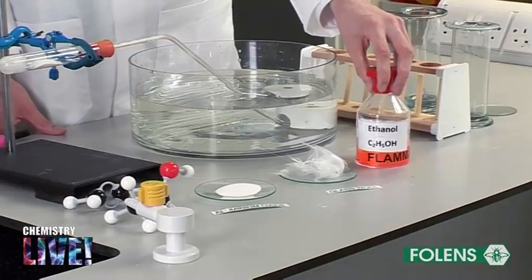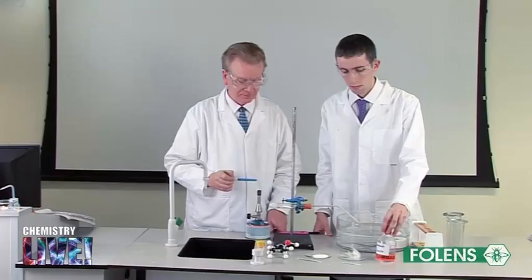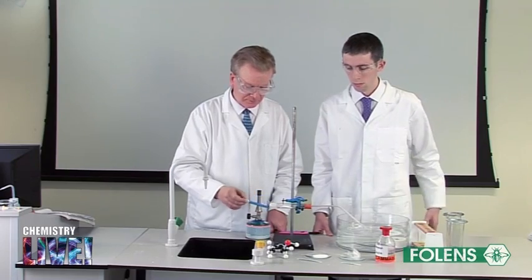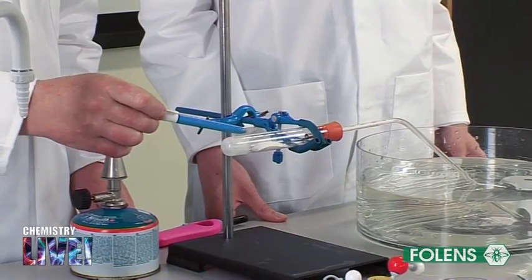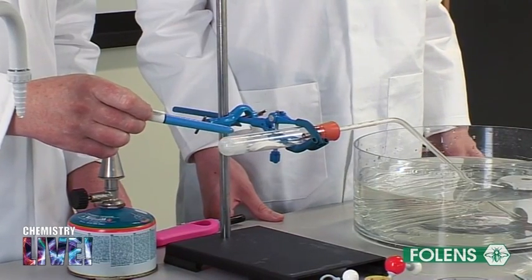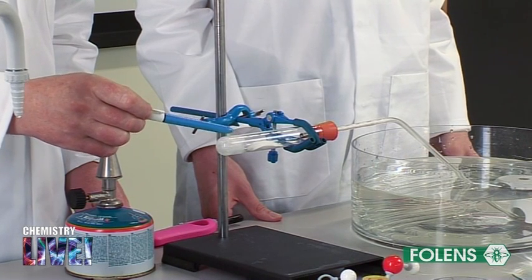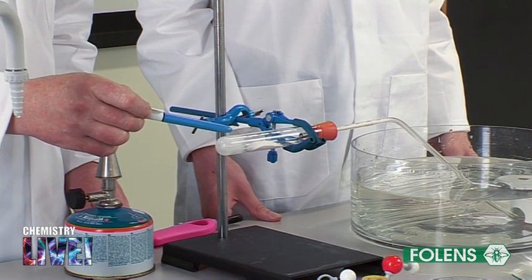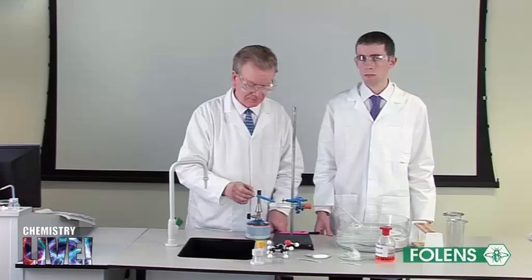Some ethanol was poured into a boiling tube to a depth of about 2-3 cm. Some glass wool was added to soak up the ethanol. The glass wool is used to hold the ethanol in place while the reaction to produce ethene is occurring.